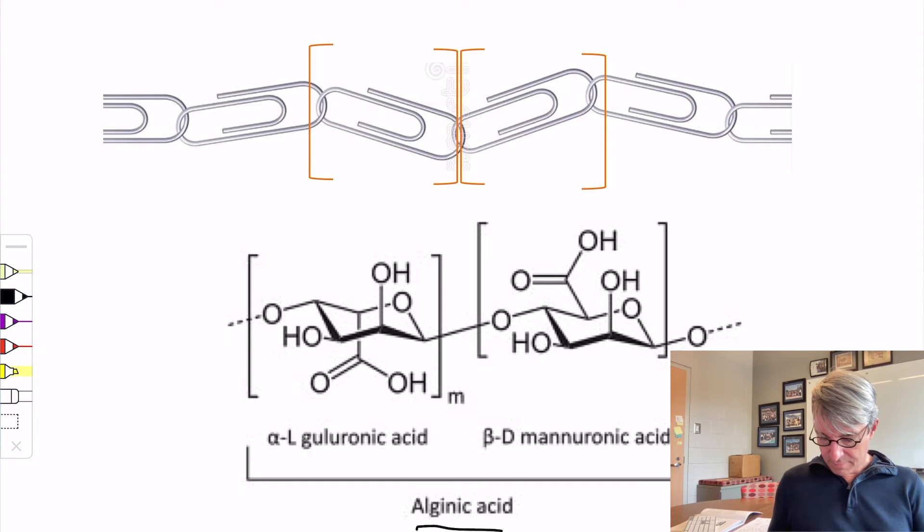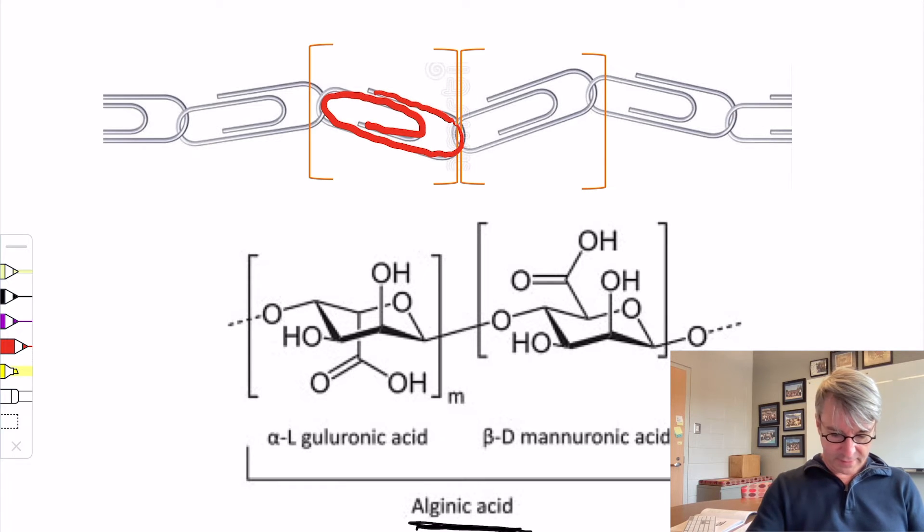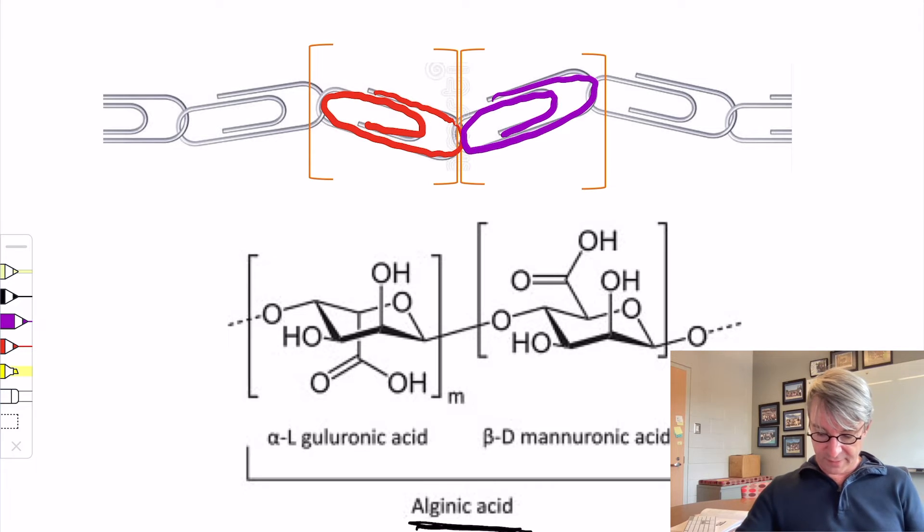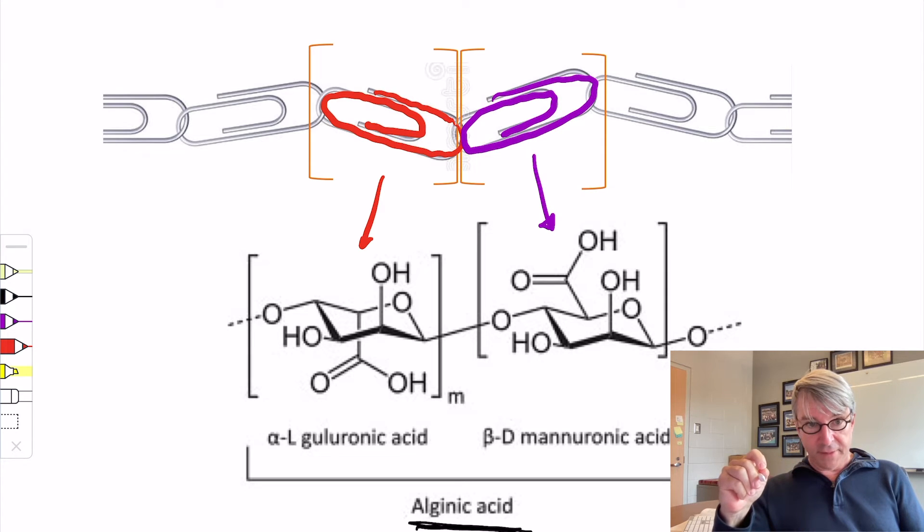The polymer, the alginic acid that is in kelp, has a structure that looks like this. It has two different repeating subunits. One if we can sort of highlight in red, and the other one can simply be purple. Now, you don't need to write the structure for alginic acid. You can google it just like I did. But one of these is a manoronic acid, and the other is a guluronic acid.